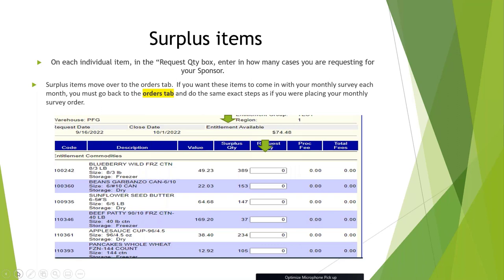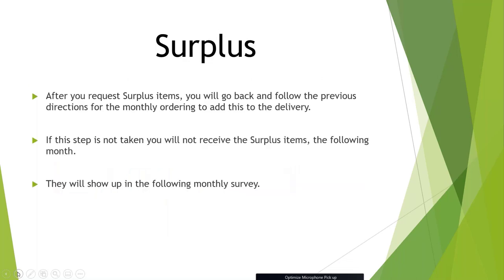If you do not complete that Orders step, those items will not come the following month — they will be rolled over to the next monthly survey. After requesting surplus items, go back and follow the previous directions for the monthly order to add them to the delivery. If this step is not taken, surplus items will not be received the following month; they will show up on the following monthly survey instead.